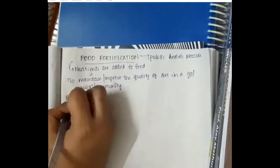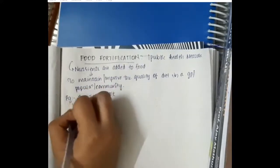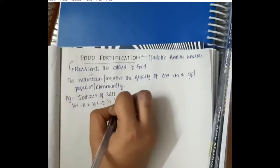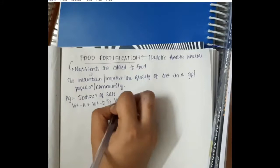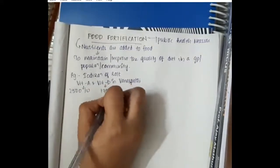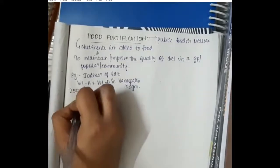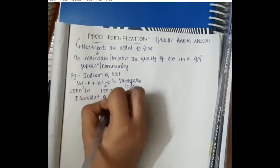For example, years back India was an endemic country for goiter due to iodine deficiency. In order to overcome that, the Government of India started the program of iodination of salt. Salt is a commonly consumed commodity by everyone, so the government started adding iodine to salt. Similarly, vitamin A and vitamin D are added to 100 grams of vanaspati oil - vitamin A is 22,500 international units and 175 international units of vitamin D are added. Fluoridation of water can also be done.